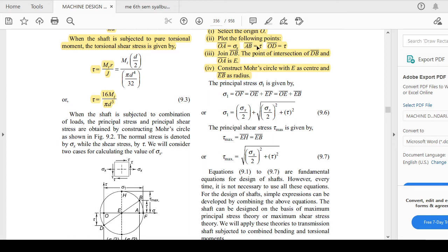Similarly, OD is plotted, and after that you join DB. You will get the intersection between DB and OA as E. By taking E as the center and EB as the radius, you can construct the whole Mohr's circle.